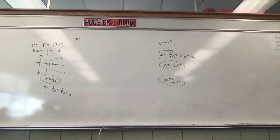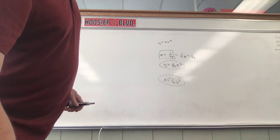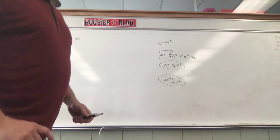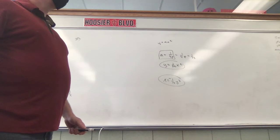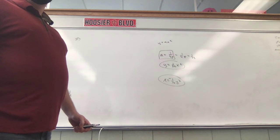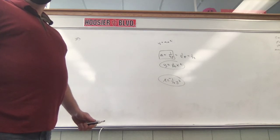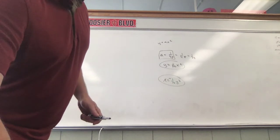Why did we use x squared for 25 but y squared for 29? Because 25 was going up and down — up and down is y, and you write it as y equals ax squared. For 29 it was going sideways — left and right is x, so you write it as x equals ay squared.